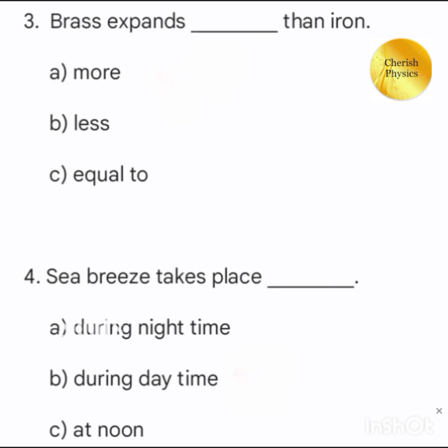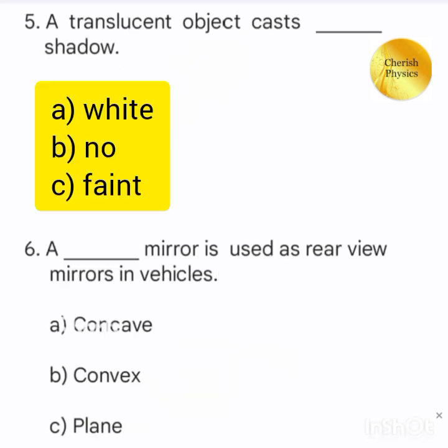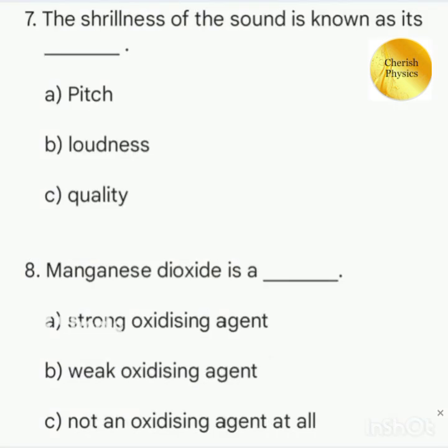Sea breeze takes place. A translucent object casts dash shadow. Which mirror is used as a rear-view mirror in vehicles? The shrillness of the sound is known as. Manganese dioxide is a.